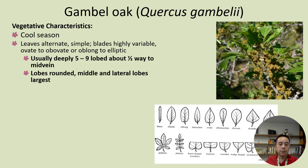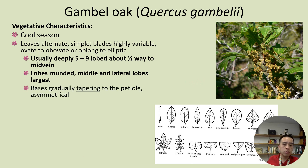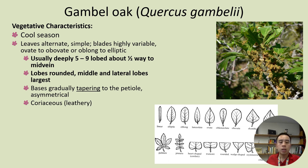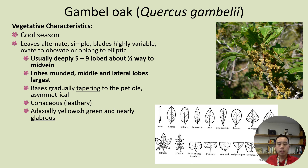The lobes themselves are often rounded — not sharp or tooth-like. Usually the middle and lateral lobes are the largest. The bases are gradually tapering to the petiole and typically asymmetrical. Tapering means becoming thinner or narrower on one end. The leaves are also coriaceous, or leathery. Adaxially, the leaves are yellowish-green and nearly glabrous — adaxial meaning the upper surface, whereas abaxial means the bottom surface of the leaf.